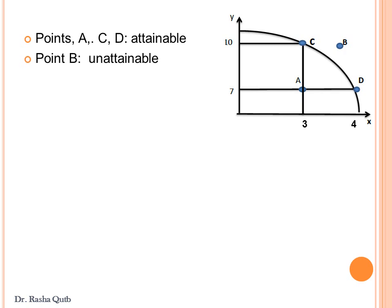Attainable means it can be produced. Point B is unattainable — it is a desired point that the economy has no ability to reach because of limited resources. Point C and point D, because they are located on the production possibility curve, are both efficient points, because all resources are fully employed. The economy is in a recession — which point will be produced? This is point A. Any point below the curve indicates idle resources or a recession.